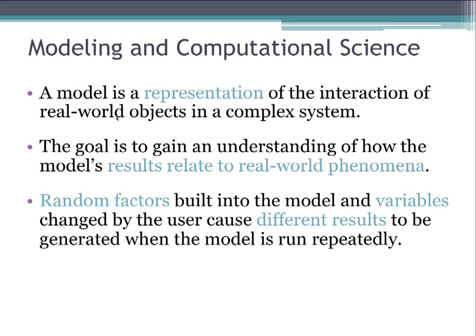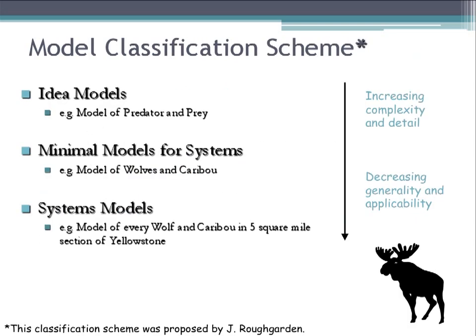We learn about the overall behavior of the model. There's a classification system developed by Roughgarden, in which we go from basic, very general models to models with increasing complexity and detail. The most basic is an idea model — for example, a model of a predator and prey as generic entities. The next level is a minimal model for a system, where you specify what the predator is, such as wolf, and what the prey is, such as caribou. And finally, there are full systems models — for example, a model of every wolf and caribou within a five-square-mile section of Yellowstone. However, as you get more and more detailed, you decrease the generalizability and applicability of the model.